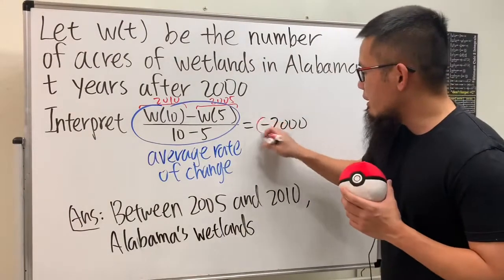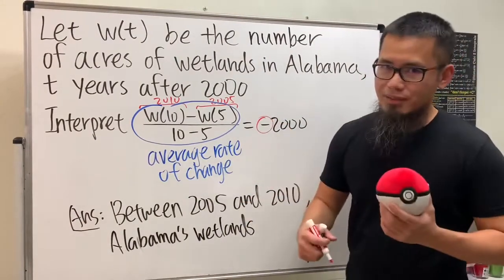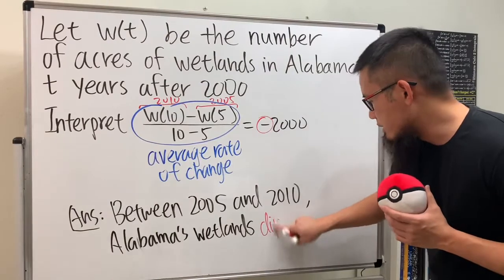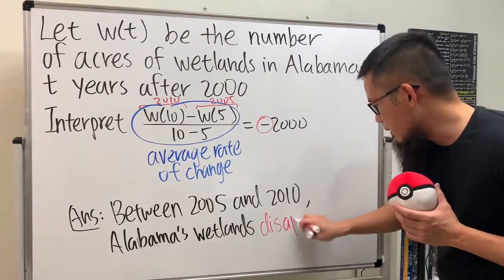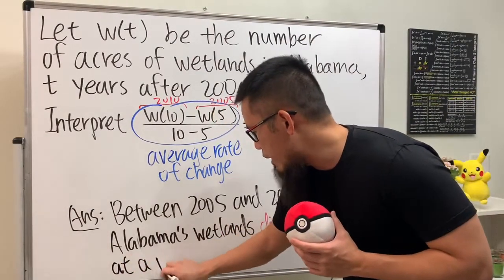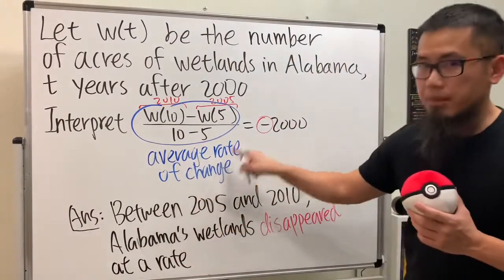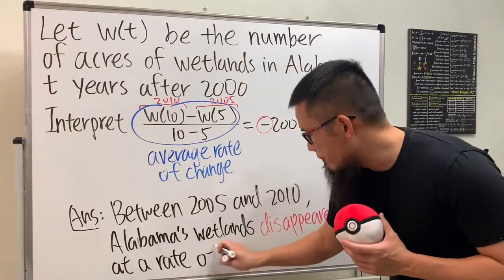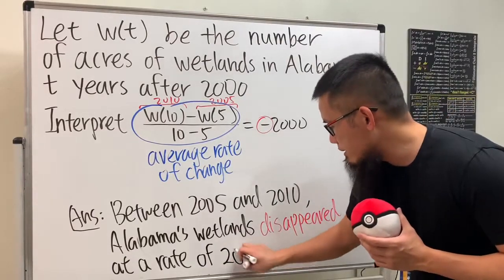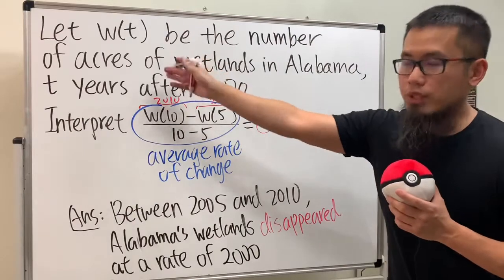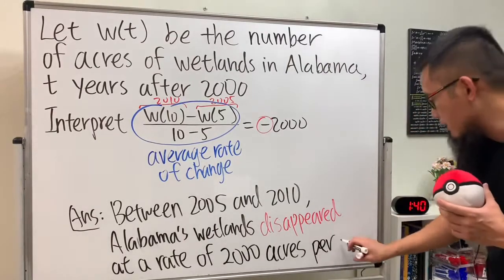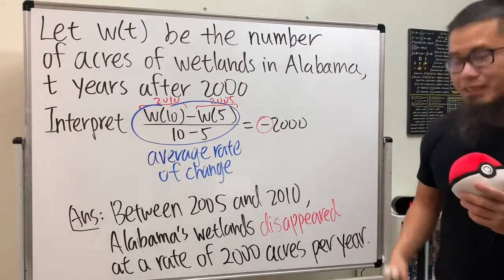Notice this value is negative, so are we gaining or losing? We are losing. Because we have a negative rate, we say 'disappearing.' So: Alabama's wetlands are disappearing at a rate of — and since we already said disappearing, we don't need the negative sign — 2000 acres per year, between 2005 and 2010.